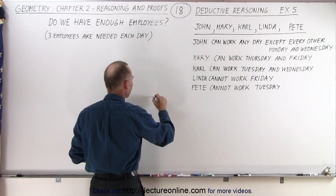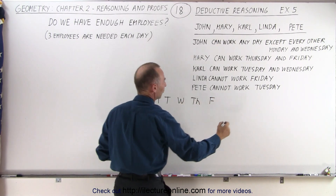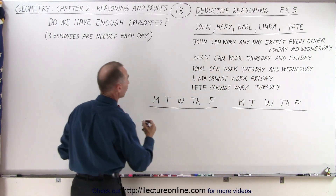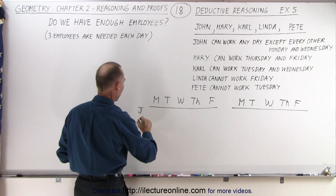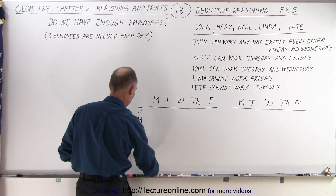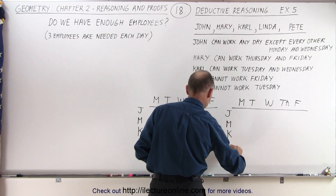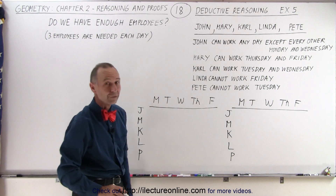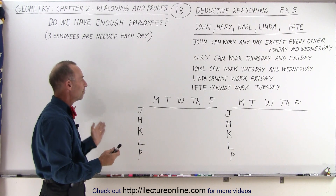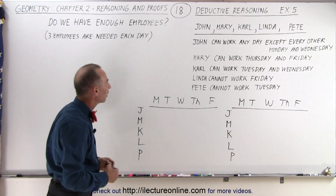For week one we have Monday, Tuesday, Wednesday, Thursday, and Friday. And for week two we have the same days listed. We have five employees: John, Mary, Carl, Linda, and Pete. Let's see if we have enough employees for those two weeks — and of course they would repeat. We want to make sure we have at least three individuals that can work on every one of the days.